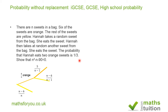Now suppose Hannah picked a yellow sweet first time round. For the next pick there are still six orange sweets left but only n minus one sweets left in the bag, so the probability of picking an orange is six divided by n minus one. The probability of picking a yellow second time round is n minus six minus one divided by n minus one, which is n minus seven over n minus one, because there is one fewer yellow sweet left.